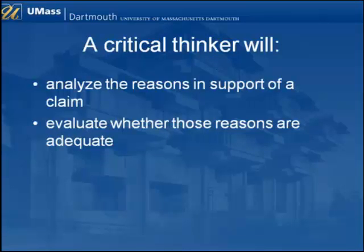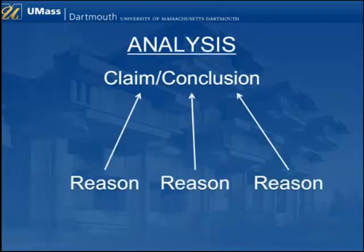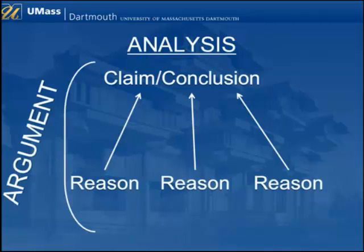Let's take a closer look at those two key activities: analysis and evaluation. When critical thinkers analyze a claim, they specify the claim or conclusion that is being made, and delineate all of the reasons that are given to support the claim. The conclusion, combined with supporting reasons, constitutes an argument. Analysis involves describing what this argument is.